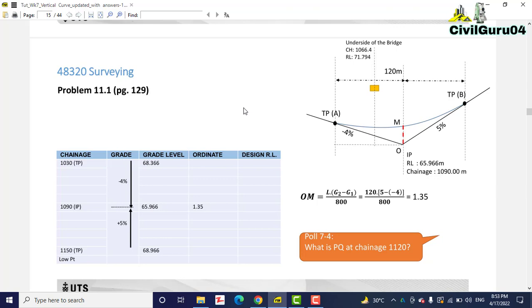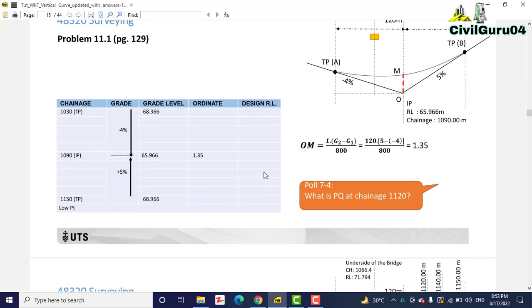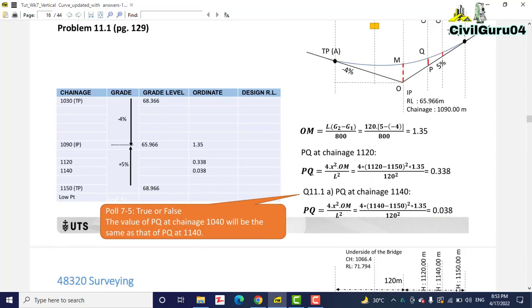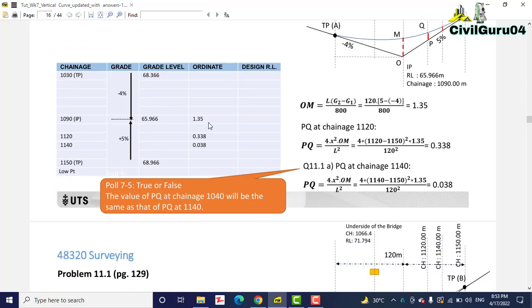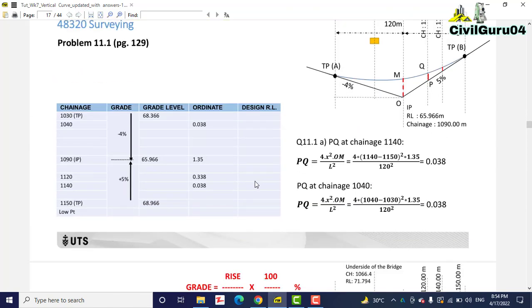For the mid ordinate we are going to calculate just mid ordinate first. You need to follow this mid ordinate formula and you will calculate 1.35. Then we need to calculate PQ which is our intermediate ordinate. We calculate intermediate ordinate, and if we have intermediate ordinate on another side then it will be the same for the same chainage on the other side. You can see we have here 1040 and here 1140 at chainage.